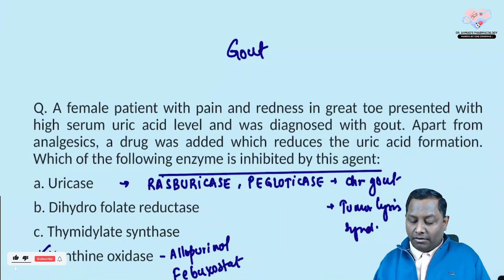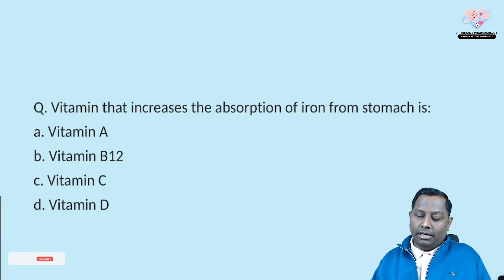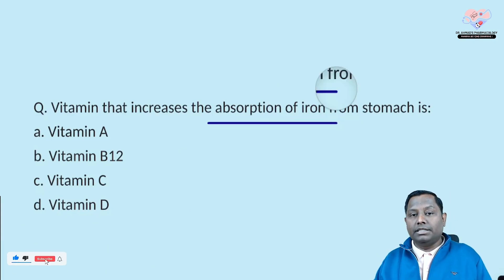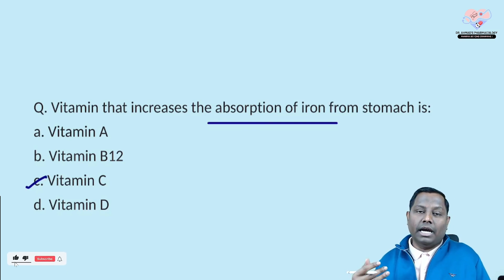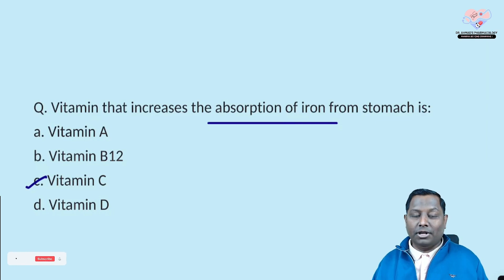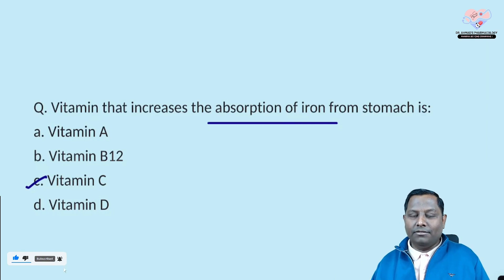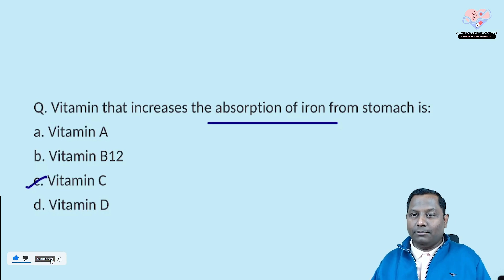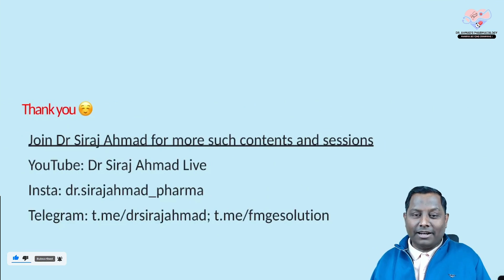Next: which vitamin increases the absorption of iron? This is a straightforward question. Iron absorption increases in acidic pH, and the only vitamin that does this is vitamin C. I personally advise patients to take their iron with lemon water rather than fresh water or milk. Milk contains calcium which chelates iron and interferes with absorption, so vitamin C is the answer.